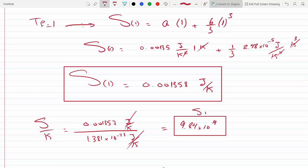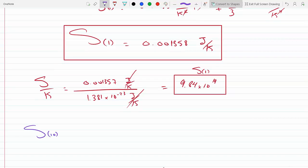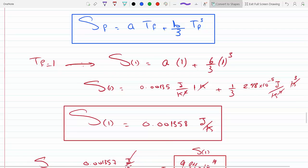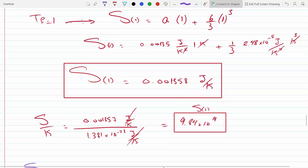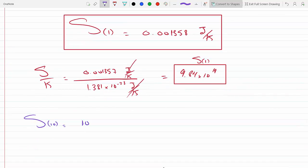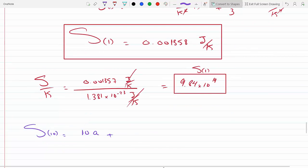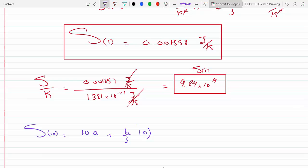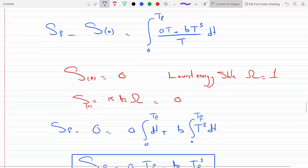This is S of 1. Likewise for T equal 10, I just plug in 10. I get 10a. We already have a and b, so we just plug these in.